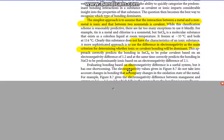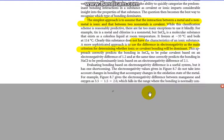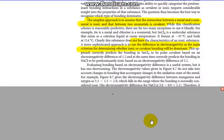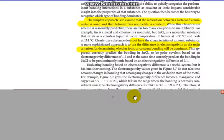Evaluating bonding based on electronegativity difference is a useful system, but it has shortcomings. The electronegativity values given in that figure do not take into account changes in bonding that accompany changes in the oxidation state of a metal. For example, iron 2 versus iron 3, or tin 2 versus tin 4, because remember those transition elements can have more than one positive charge.